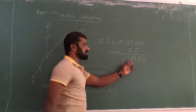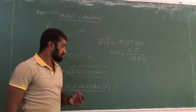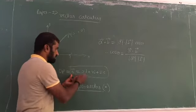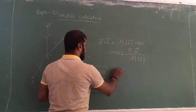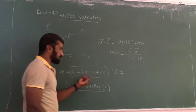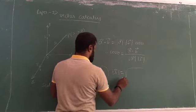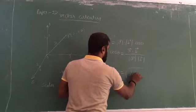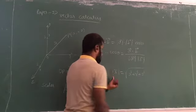How do we define the magnitude of a vector? The modulus of vector R is defined as the square root of x squared plus y squared plus z squared.